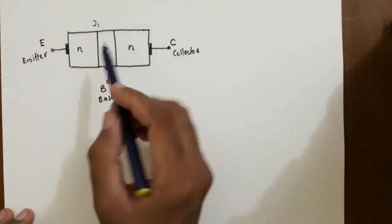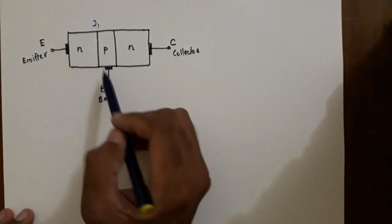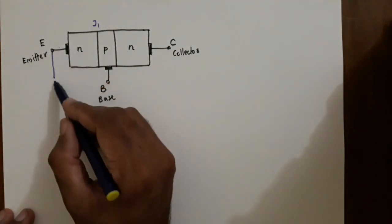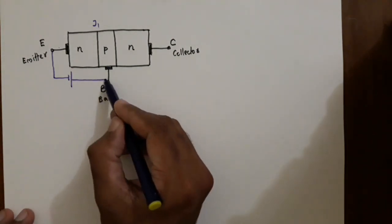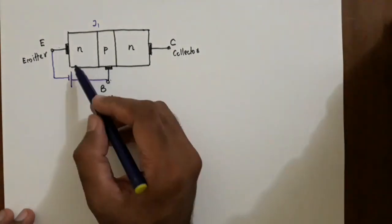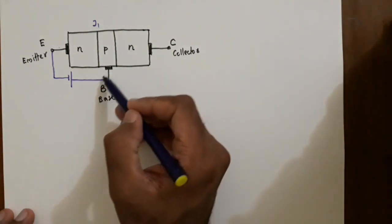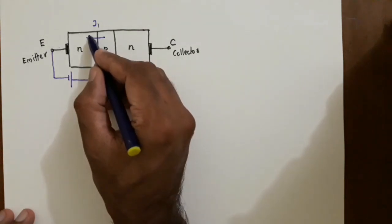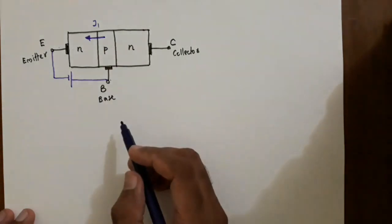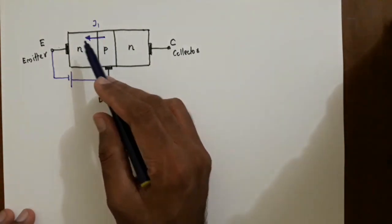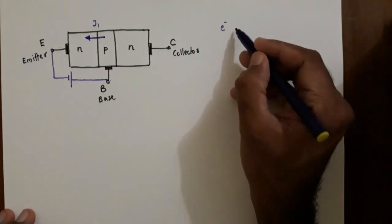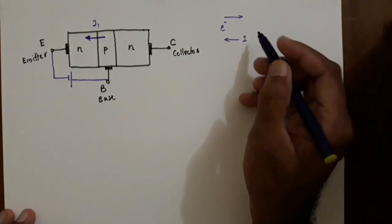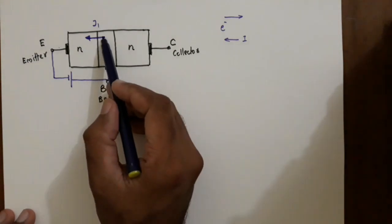This junction J1, also called the emitter-base junction, is forward biased — N is connected to the negative of the battery and P is connected to the positive. Current will flow easily through this low resistance path. The direction of current flow is opposite to the direction of electron flow; that is our convention.